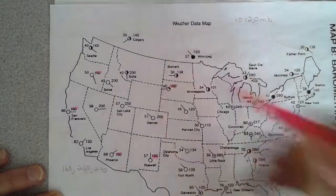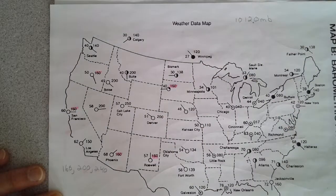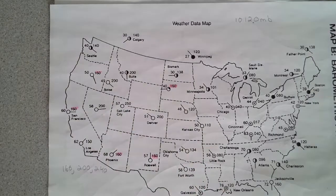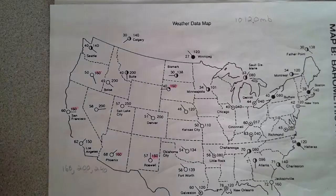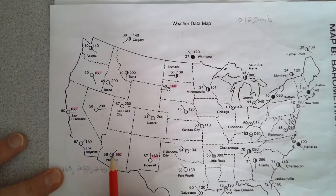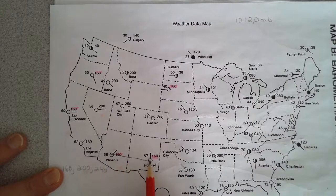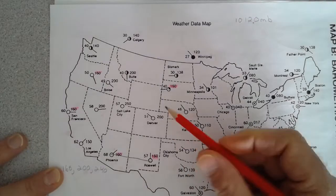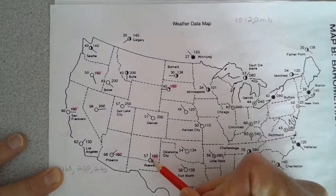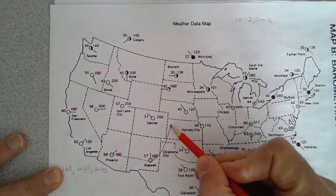That one's done. The next thing we're going to do is look everywhere and highlight everywhere where you see 200. Once again, I should see somewhat of a pattern — a circular pattern. Remember, isobars kind of follow the same path as the previous line. So I would connect those together here, making a nice smooth movement, and label it 1,020 millibars.